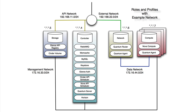Our module is going to assume that we have four networks available to us: an API network, an external network, a management network, and a data network. It's not necessary for your own deployment to have four networks, but it is important that you have an external facing network and an internal facing network.